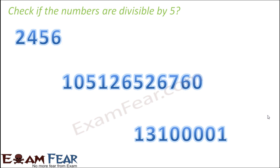So quickly look at these numbers: 2456. Will it be divisible by 5? Definitely not, because it doesn't have 0 or 5 in its units place. This number, yes, it will be divisible because there is 0 in the units place. This one again not, because 1 is at the units place.